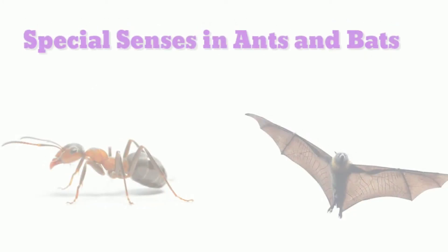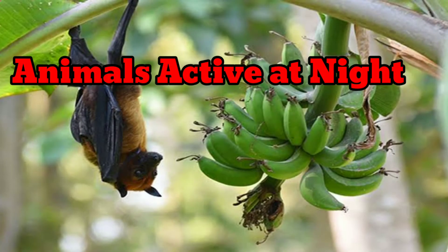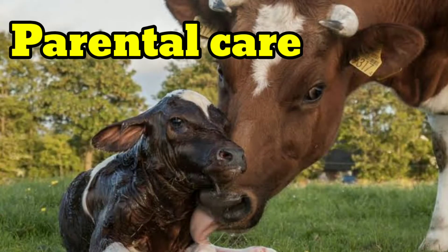Next, special sensors in ants and bats — erumbukal matrum vavvalgalil syrup pulan unnarvukal. Next, we have learned animals active at night — eruvun eirathil shayal paduun vilangukal. Finally, we have learned parental care — petro paramarippu.